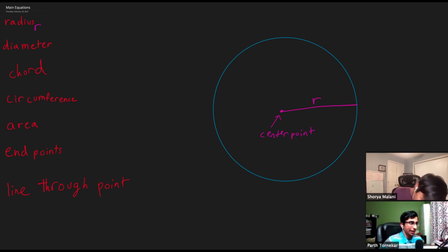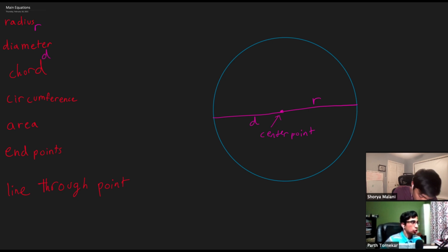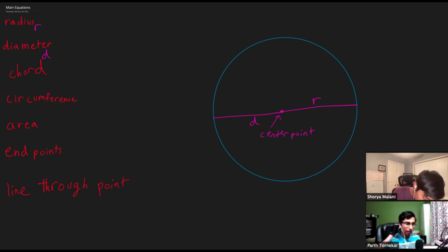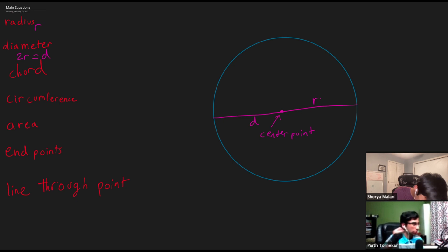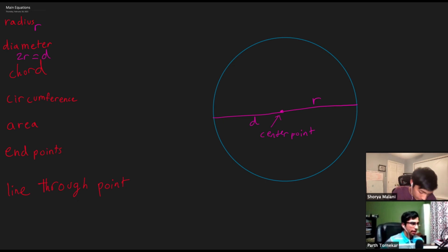Not a capital r, because physics has to rob us of all our capital letters. Now if we double this radius, or extend it from one end to the other, that makes a diameter. The diameter is going to be known as 2r, or with a lowercase d. To find the diameter if you don't know it and you know the radius, it's just two times r.